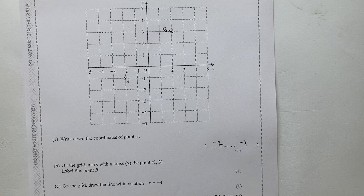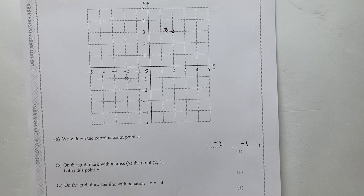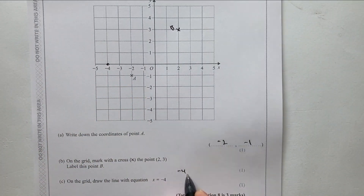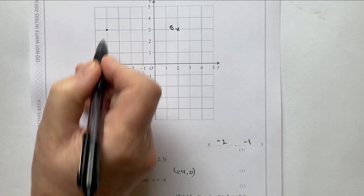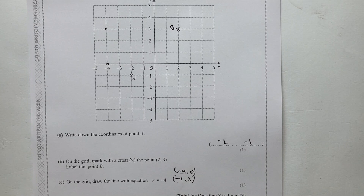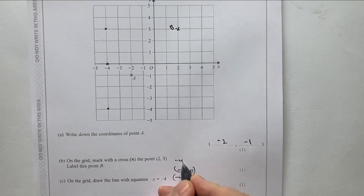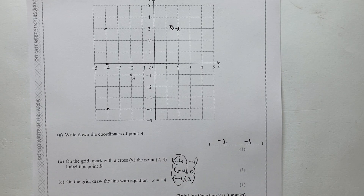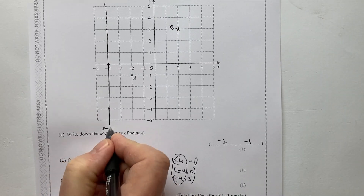Finally, draw the line with the equation x = −4. This is all the points where the value of x is −4, such as (−4, 0), (−4, 3), and (−4, −4). On all of those coordinates, x is minus four, so the line x = −4 goes through all those points and continues forever — it is a vertical line.